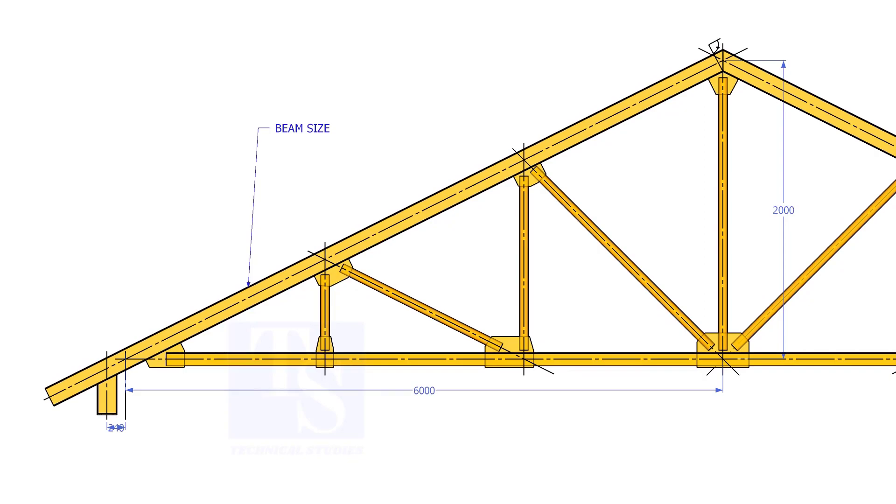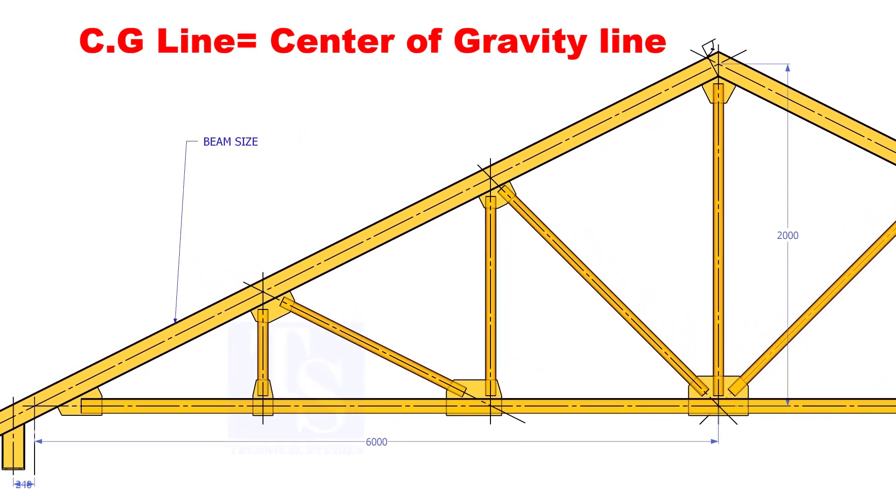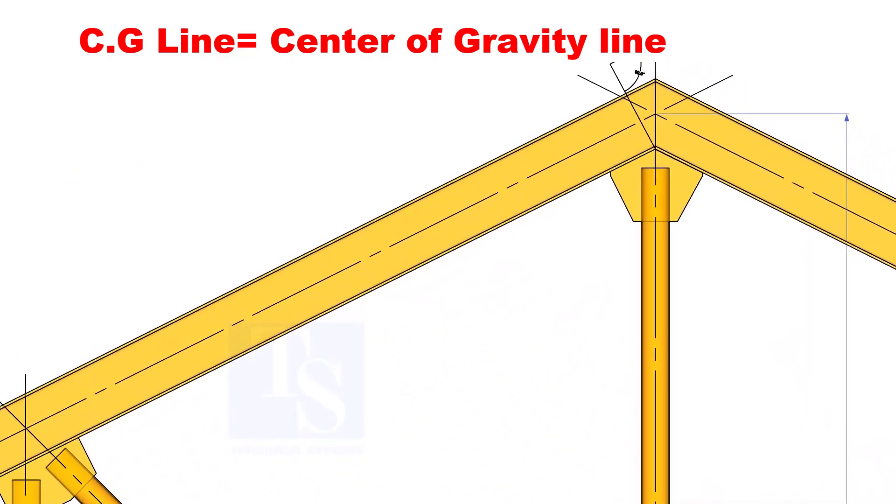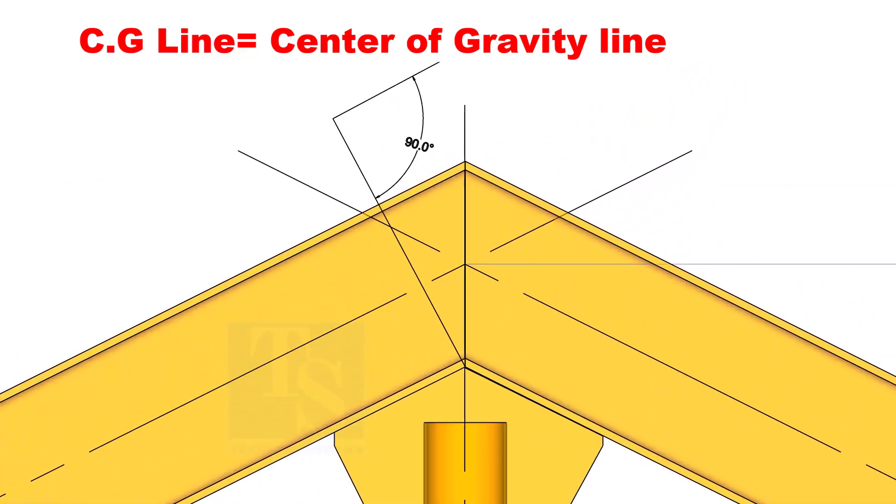In the drawing, usually the span and the height through the CG line of a truss are given. Remember that the CG line doesn't pass through the center of all the objects. It depends on the shape and cross section of an object.